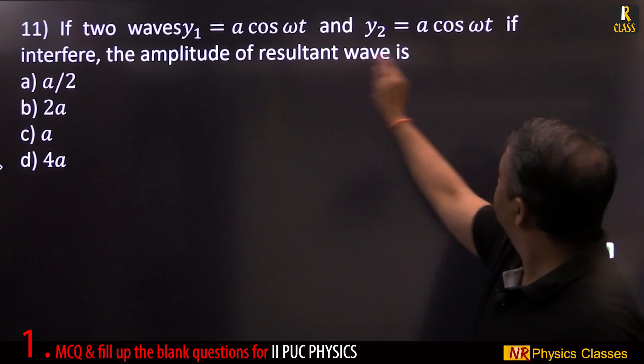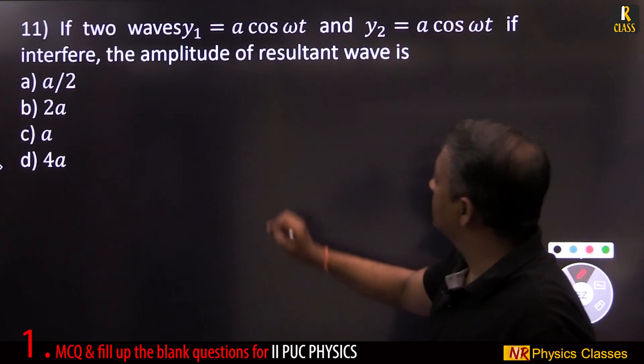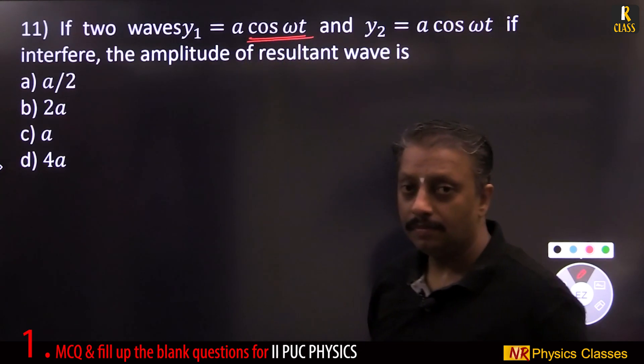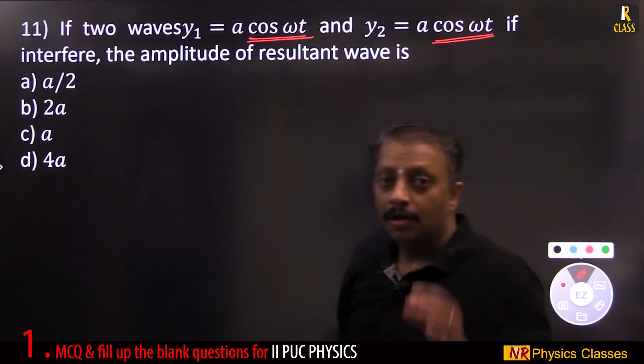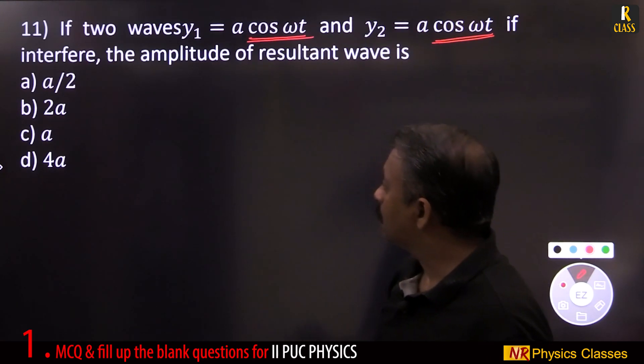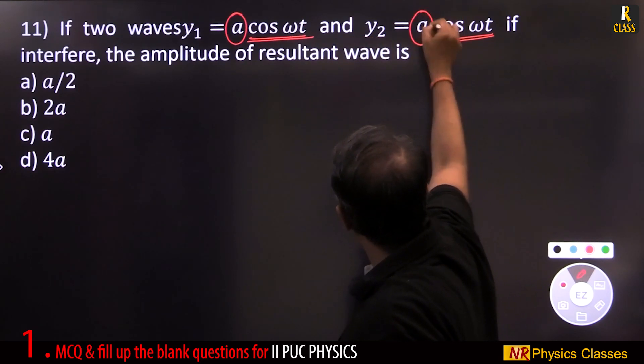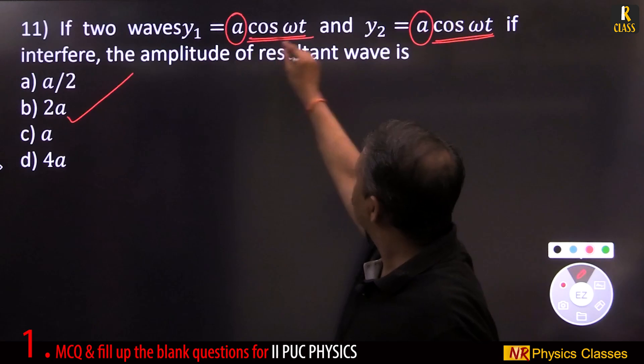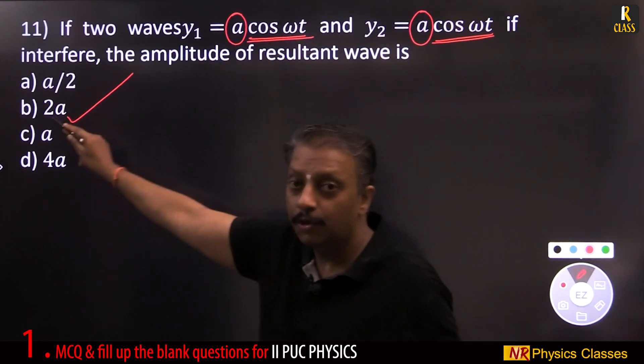If the two waves interfere, amplitude of the resultant. First equation is with cos, second is also with cos. Cos and cos means amplitude is sum of these two. A plus A is 2A. Cos with cos 2A, sin with sin 2A.